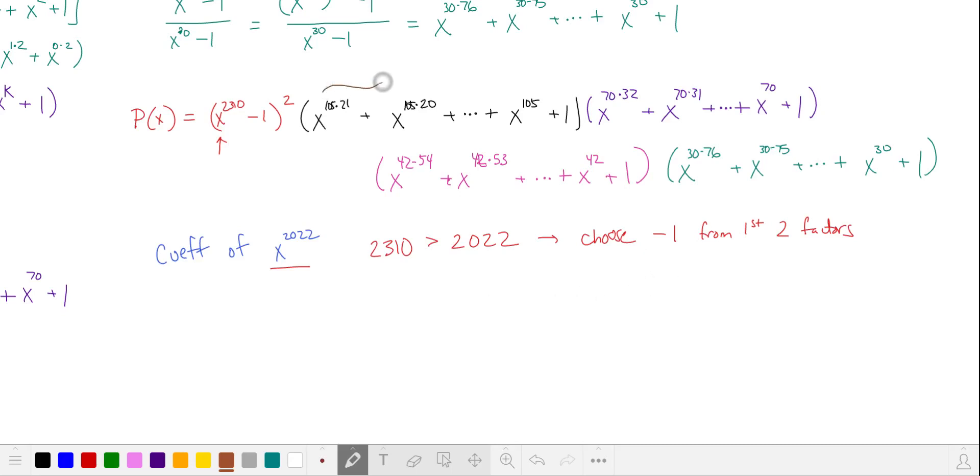Multiplying together, that will give us a product of one. All the powers of x in the first factor are multiples of 105. So we're going to build up to 2022 using some number of 105s. When we multiply by the second factor, we're going to pick one of these powers of x that are all multiples of 70.